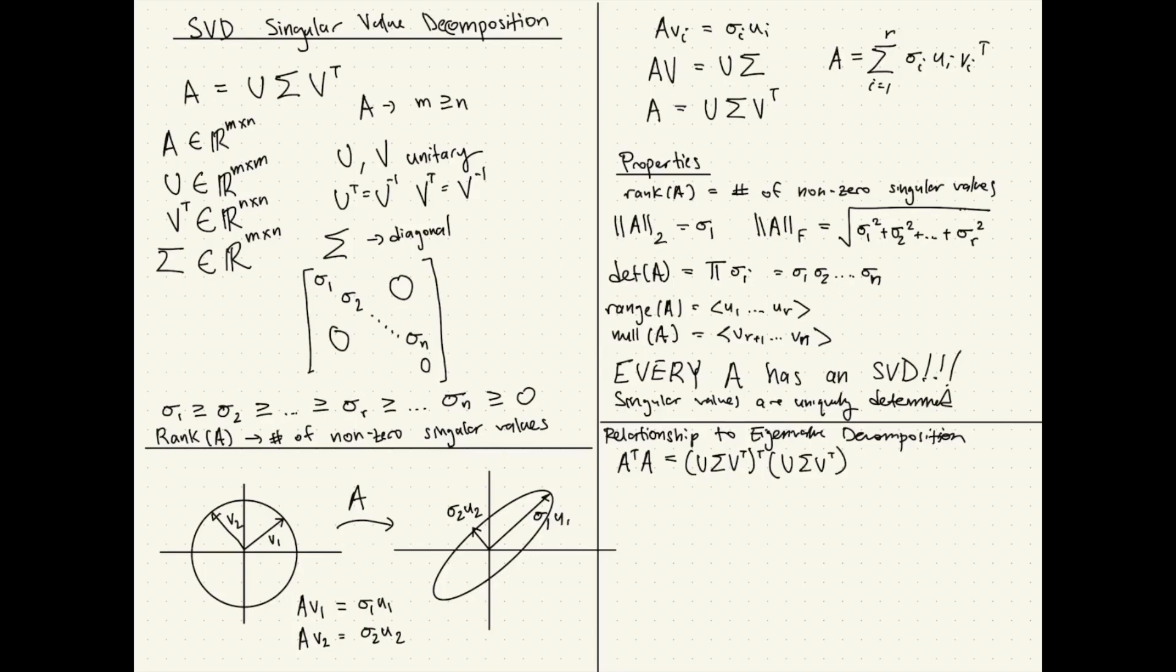If we do this calculation, we'll have inside here a U transpose U. It's unitary, so those would cancel out in the middle. We would end up with V sigma squared V transpose.